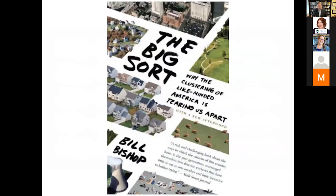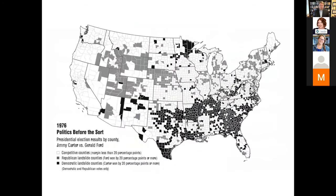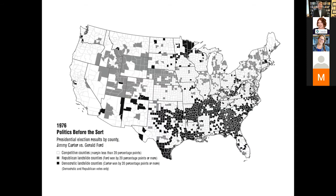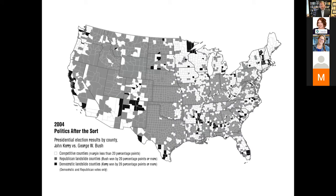Bill Bishop famously wrote a book called The Big Sort, with the subtitle about why the clustering of like-minded people is tearing us apart. I want to show you two images — it's kind of like going to the optometrist. This first one is from 1976, before what Bishop calls 'the sort.' The white counties here are competitive counties, meaning the margin is less than 20 percentage points. And then here's 2004. We lose a lot of those competitive places. As we look at these side by side, we start to recognize this clustering effect happening across the country.